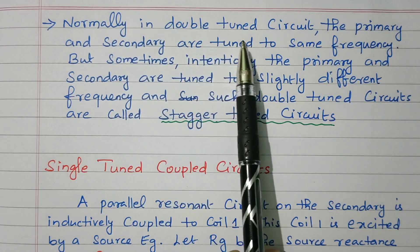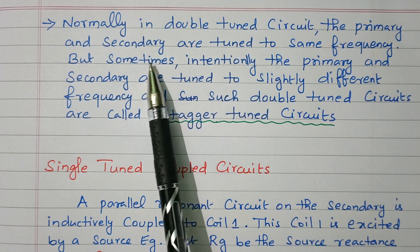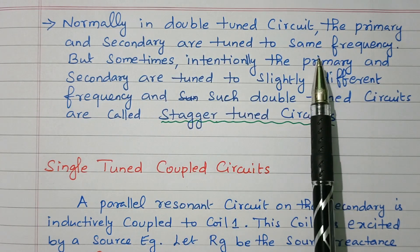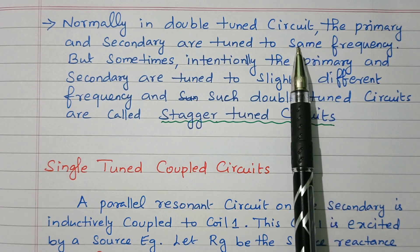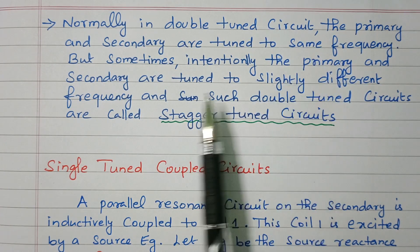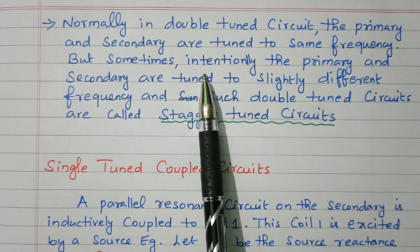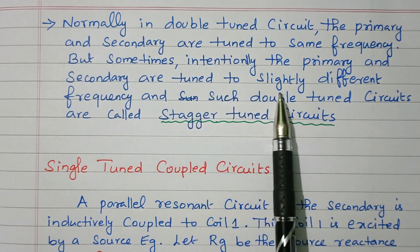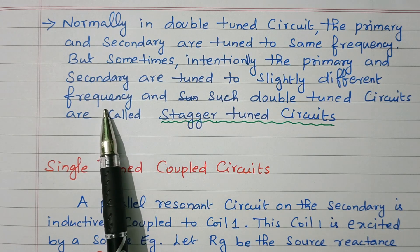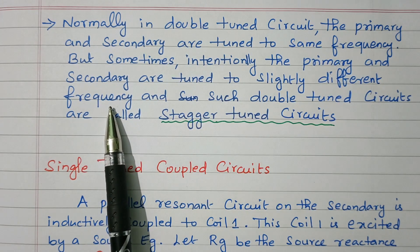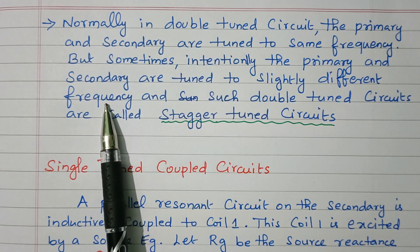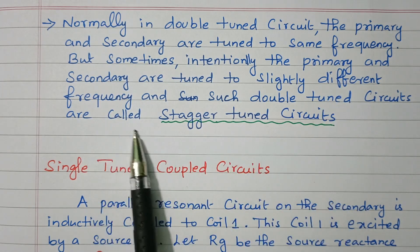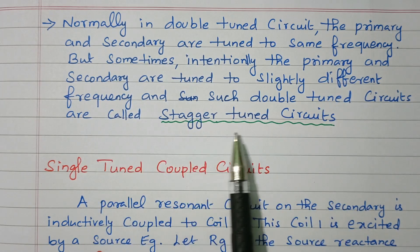Normally, in a double tuned circuit, the primary and secondary are tuned at the same frequency — that is called the resonant condition. But sometimes, intentionally, the primary and secondary are tuned at slightly different frequencies. Practically there may be some slight difference in the frequency of primary and secondary. Such a double tuned circuit is called a stagger tuned circuit.